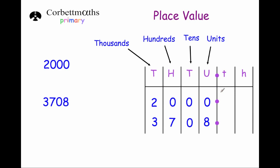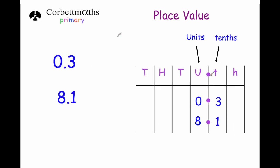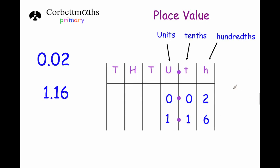Let's have a look at the columns to the right of the decimal point. The first column to the right of the decimal point is the tenths column. Here are 2 numbers: 0.3 and 8.1. The number 0.3 has got no units, so there's a 0 in the units column and it's got 3 tenths, so there's a 3 in the tenths column. 8.1 has got 8 units, the decimal point, and a 1 in the tenths column because it's got 1 tenth.